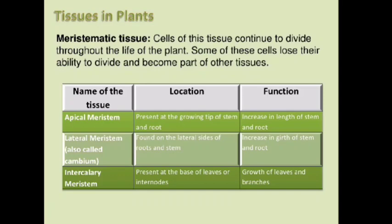To study the meristematic tissue: cells of this tissue continue to divide throughout the life of the plant, and some of these cells lose their ability to divide and become part of permanent tissues. Three types of meristematic tissues are: apical meristem, present at the growing tip of the stem and root, functioning to increase the length of stem and root; lateral meristem, also called cambium, found on lateral sides of roots and stem, helping increase girth or thickness; and intercalary meristem, present at the base of leaves or internodes, helping in growth of leaves and branches.